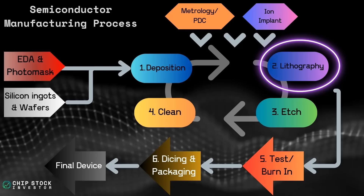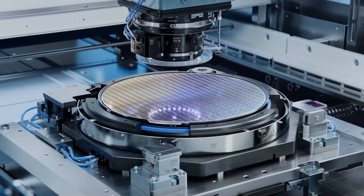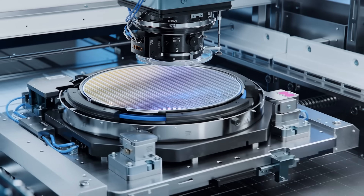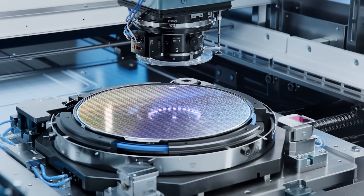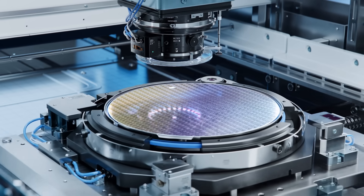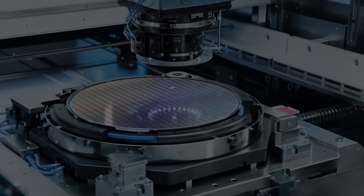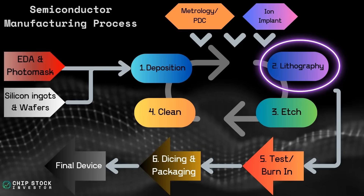Lithography is obviously a key part of that. ASML is important because they're one of the only lithography companies. A lot of people say they're a monopoly, but it's not actually a monopoly. There are other lithography providers, but ASML is the only one with extreme ultraviolet lithography machines because they hold the patents on that technology, developed over several decades. It's just that they're the only ones with EUV — the highest, most advanced lithography equipment.